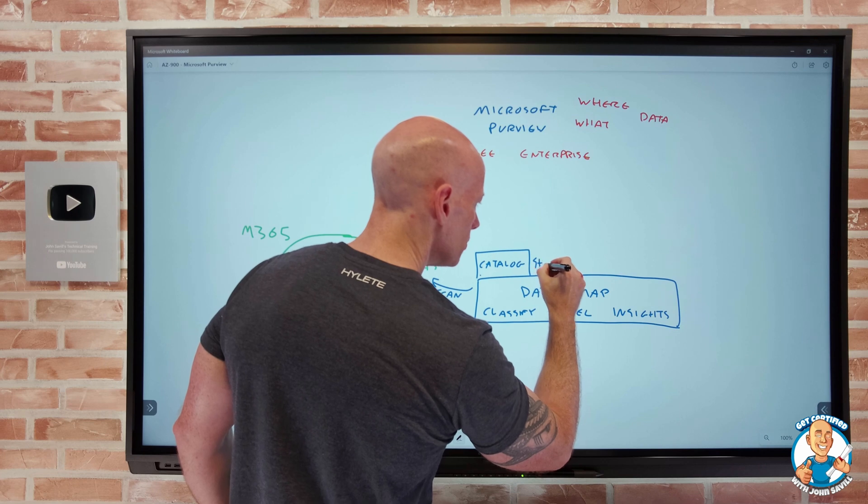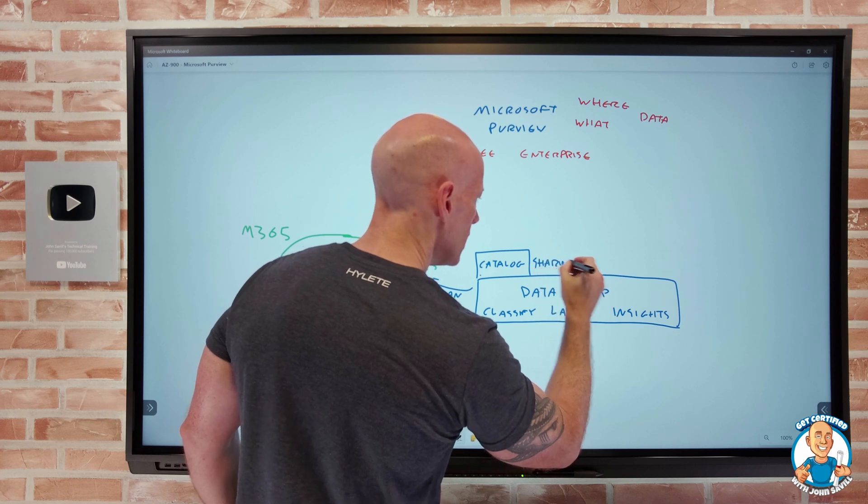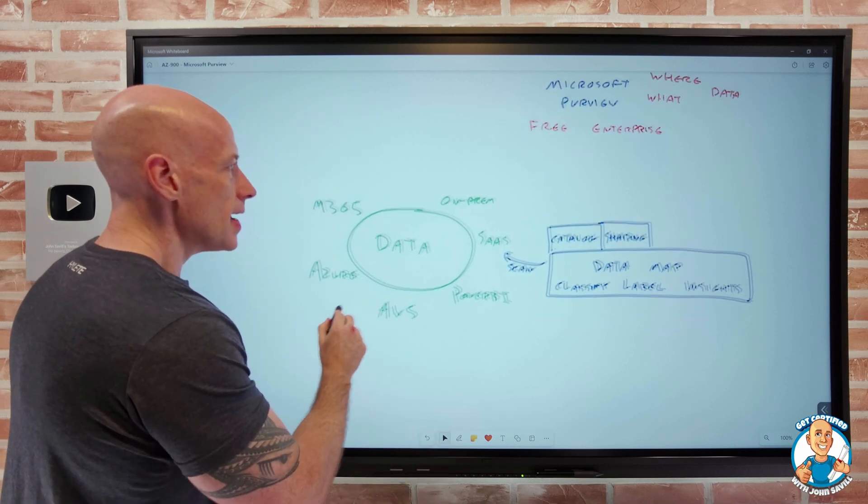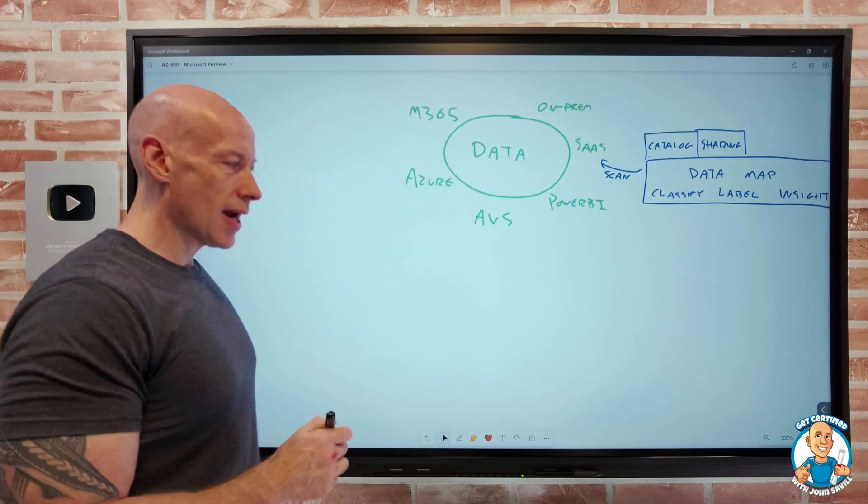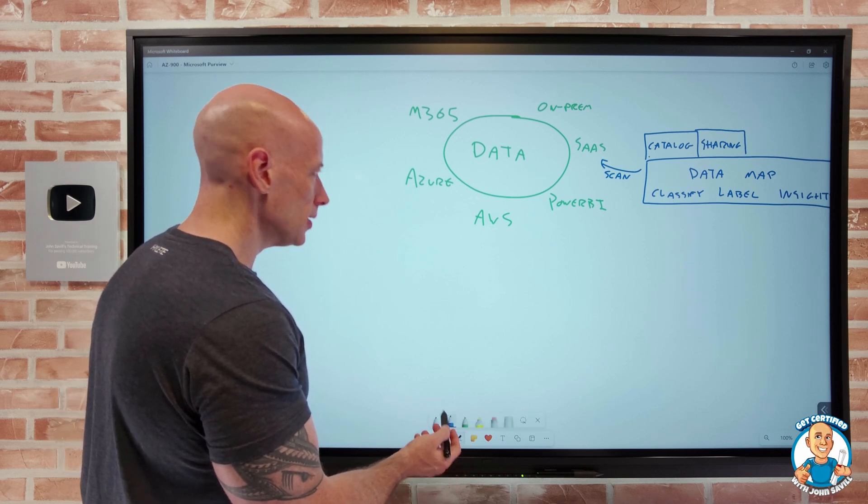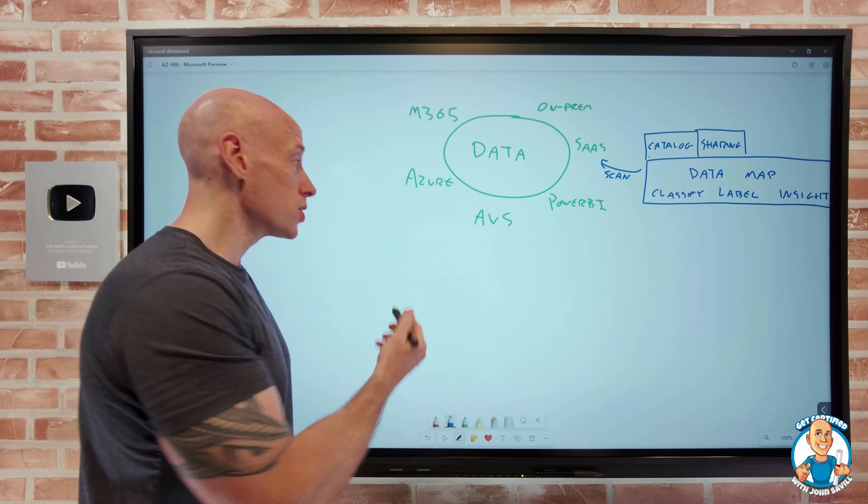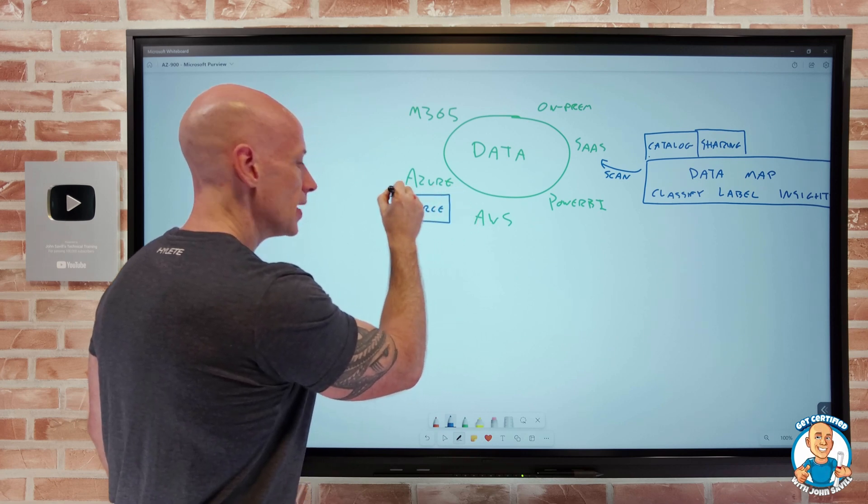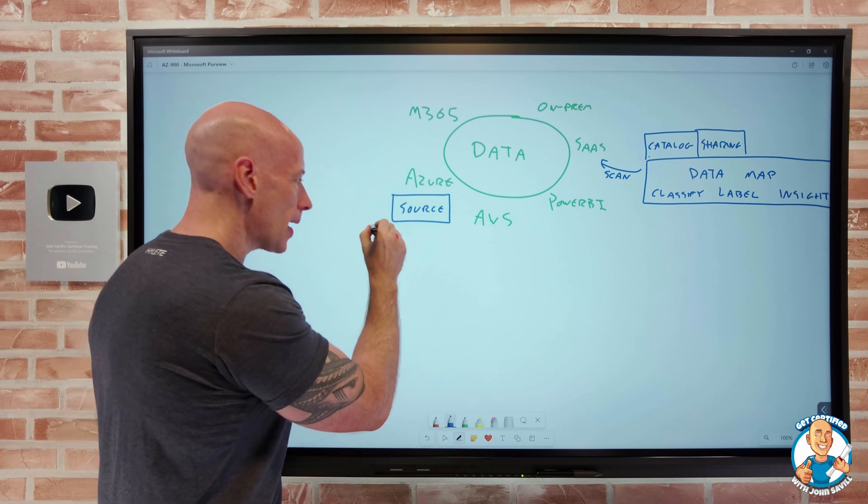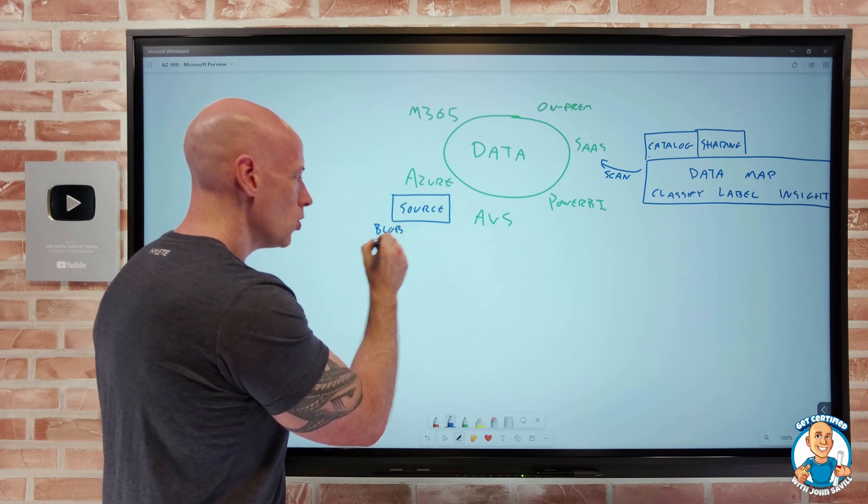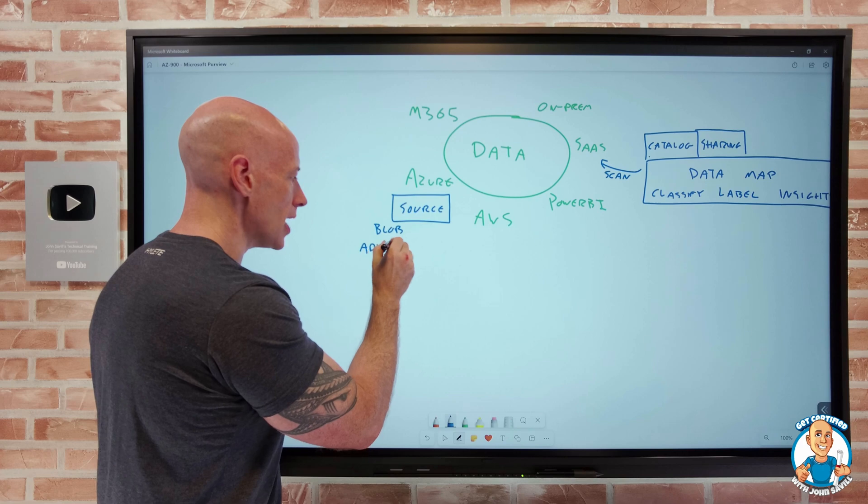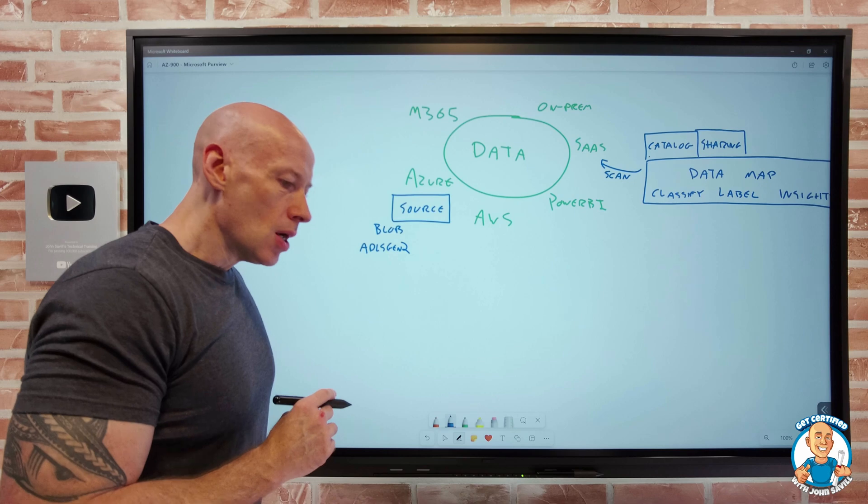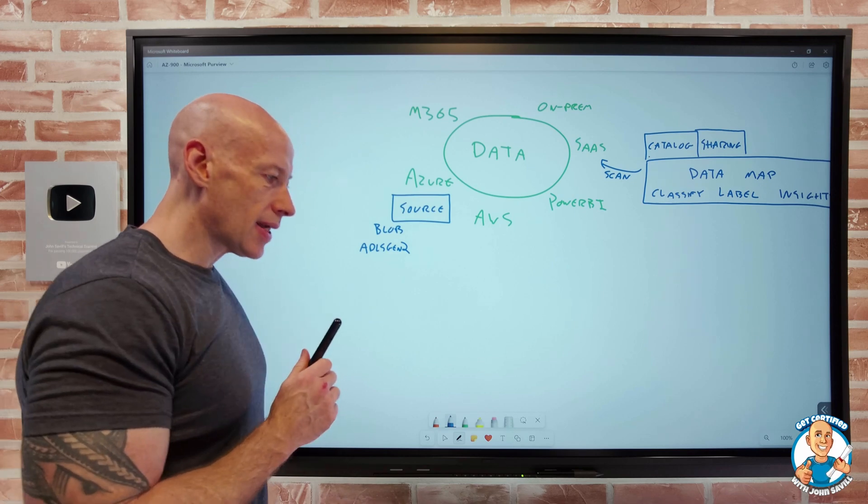Then what we can do, and at time of recording this is in preview, is data sharing. Now, this is specific to Azure. And I could think about in Azure I have a source, so I have some storage of my data. Now in this case specifically, it's talking about Blob or ADLS Gen 2, which is Blob with a hierarchical namespace on top of it.